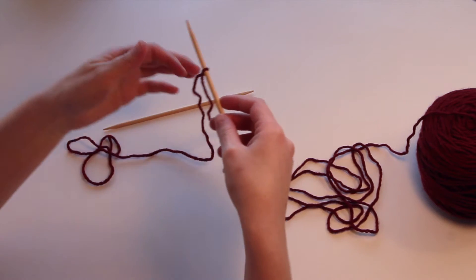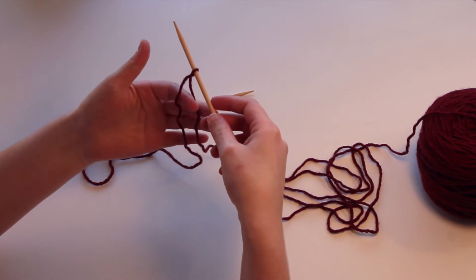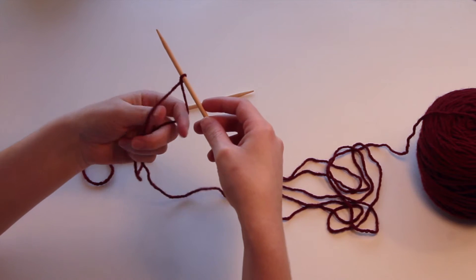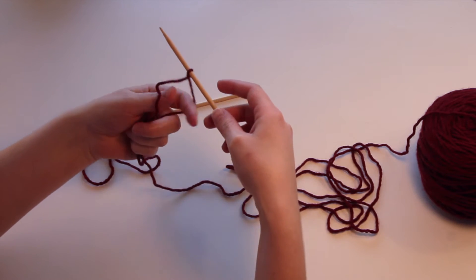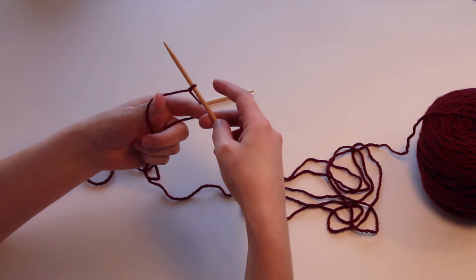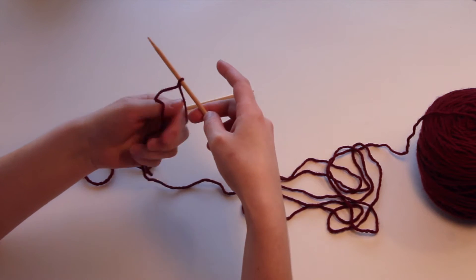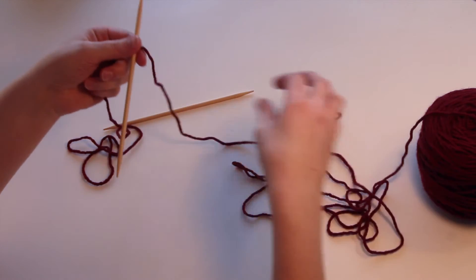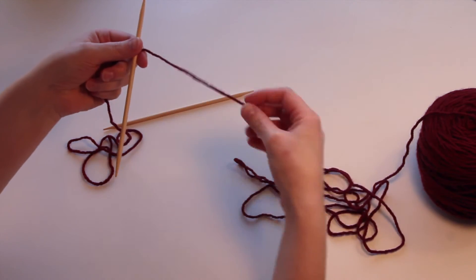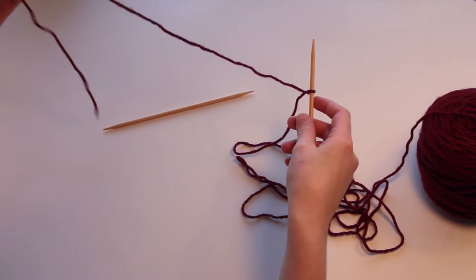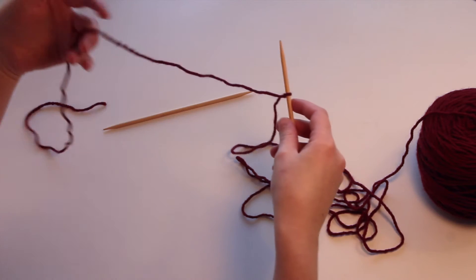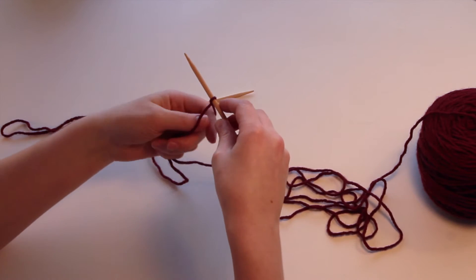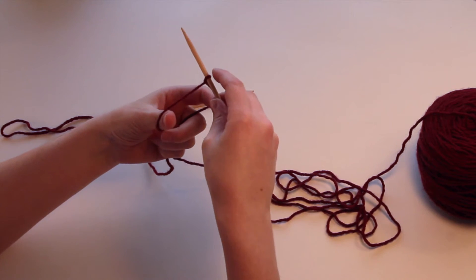So I usually hold my yarn between my fingers, my thumb and my index finger like this, and I just hold it here. My working yarn coming from my right side and what is left on my left side.